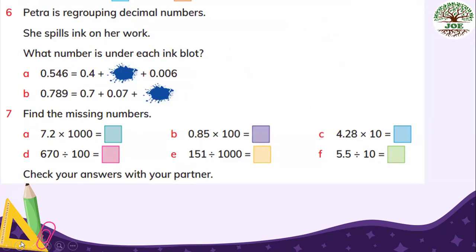And number six. Petra is regrouping decimal numbers. She spills ink on her work. What number is under each ink blot? There are two steps to do. First step, we have to do this. To add them this right side. And then. We take away from 0.546. This way we can find this value. This is first. Add them.